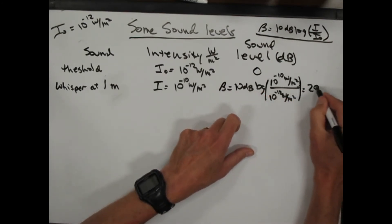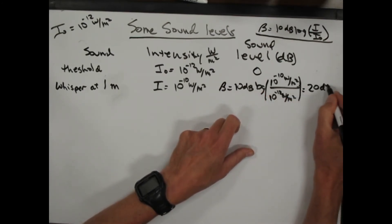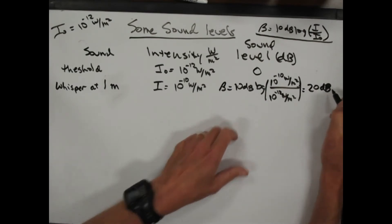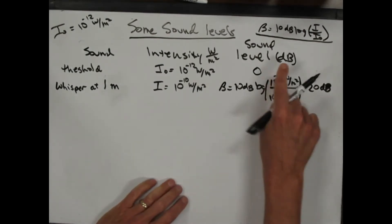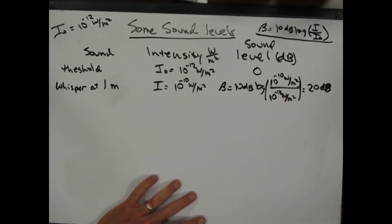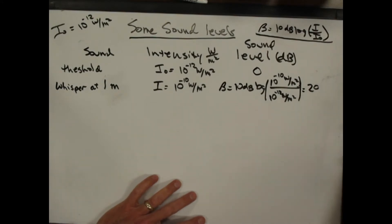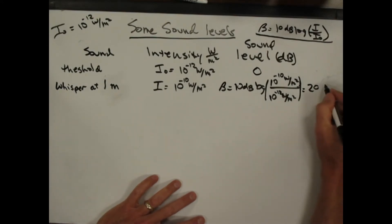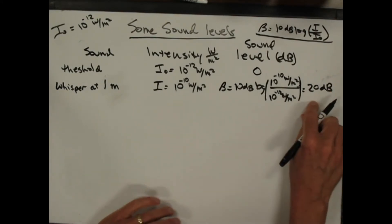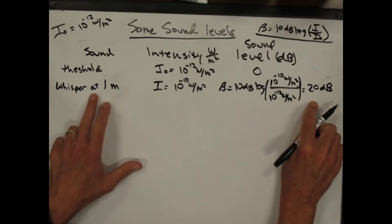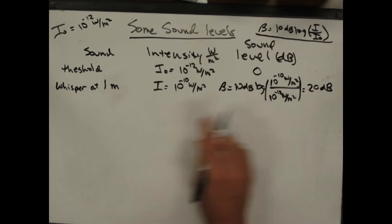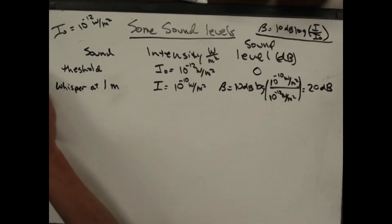Log of 10 to the 2 is just 2, and so this comes out to 20 decibels. So a whisper at one meter is 20 decibels.